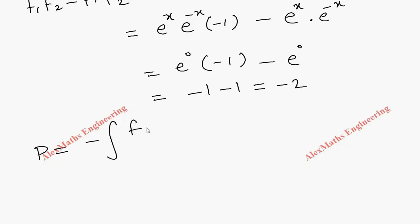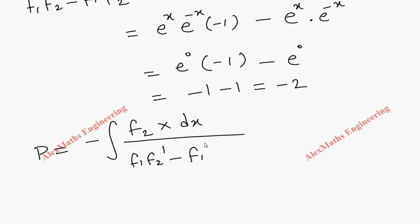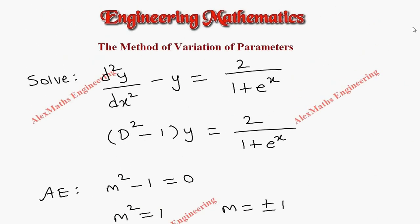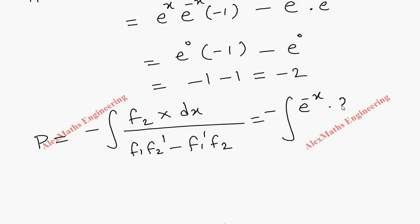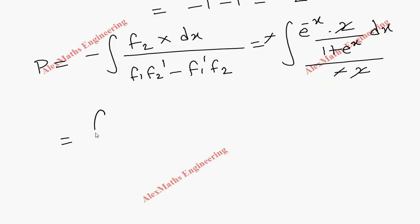Coming to the calculation of p: p = -∫[f2·X / (f1·f2' - f1'·f2)] dx = -∫[e^(-x) · (2 / (1 + eˣ)) dx] / (-2). The two minus signs and the twos cancel, leaving us with ∫[e^(-x) / (1 + eˣ)] dx.